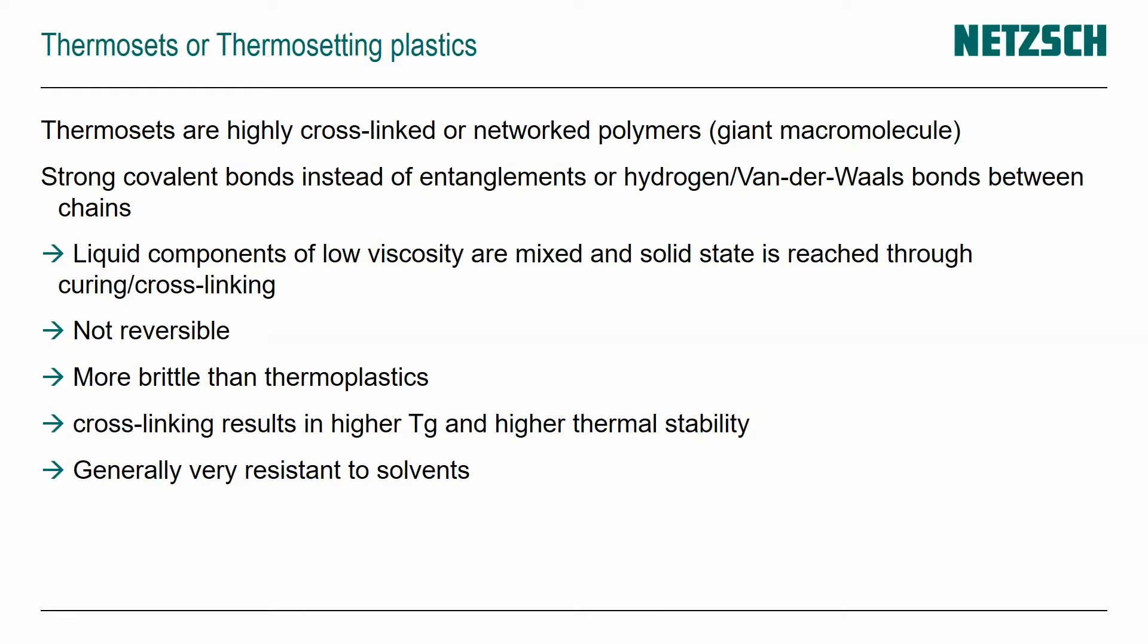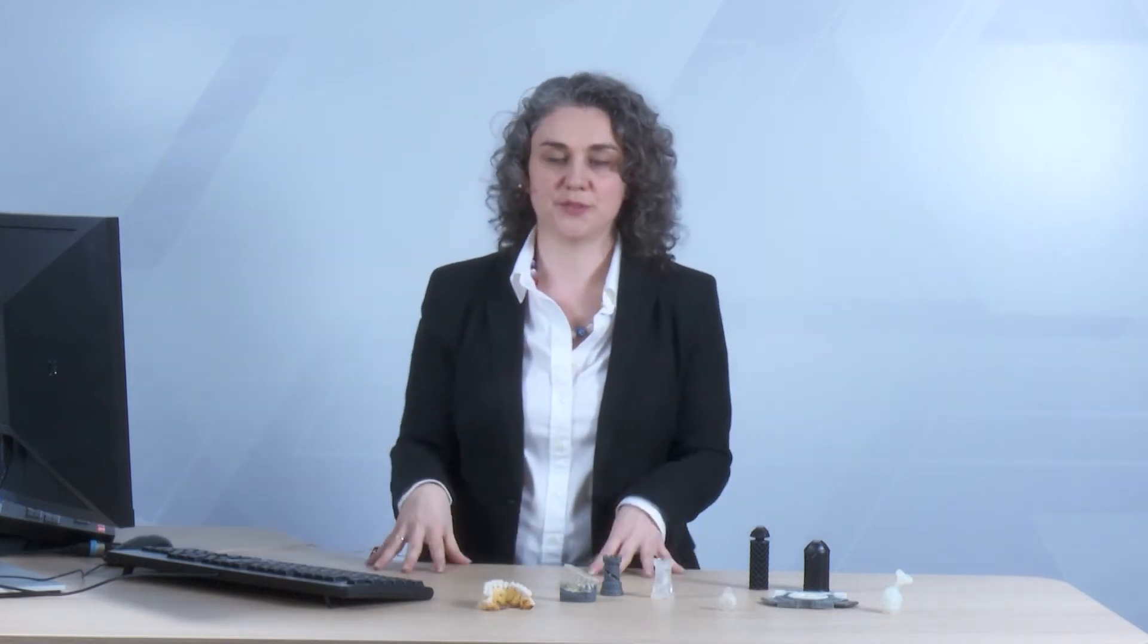Because of the covalent bonds, these materials are more brittle than thermoplastics, and the cross-linking results in a higher glass transition temperature and a higher thermostability than we have with thermoplastics. So you don't see that softening that we now know from thermoplastics before they degrade at some temperature that they can't withstand. The thermosets don't have any softening step. They just degrade once we reach 450 degrees C or around that temperature. And also because of the covalent bonds, thermosets are very resistant to solvents.